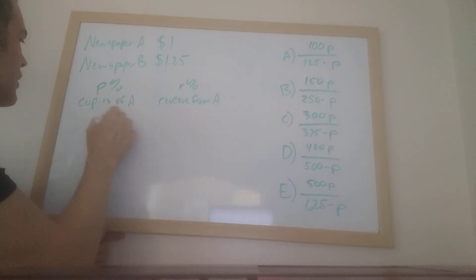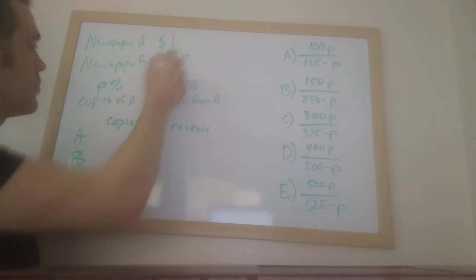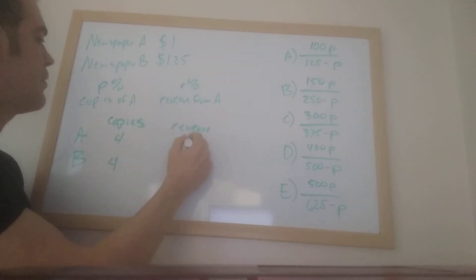Let's say copies of A and B, and then revenue from A and B. So if I want to make a nice round number, I'm going to sell four copies of B. Let's just pretend we picked the day four because it's going to be a nice number. And I'm going to say that A, they also sold four copies of A because hopefully they'll be easy to deal with. I've got a 50-50 relationship here. So if I sold four copies of A, then I made $4 from A and I made $5 from B.